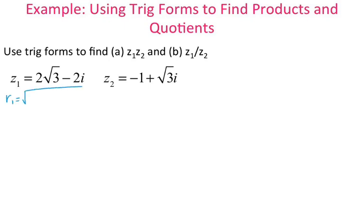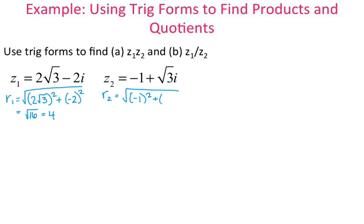r1 is the same thing as finding the magnitude of a vector. So I have my real part, 2 root 3 squared, plus my imaginary part, negative 2 squared. That gives me the square root of 16, which is 4. So r1 is 4. For r2: square root of negative 1 squared plus square root of 3 squared gives me the square root of 4, which is 2.